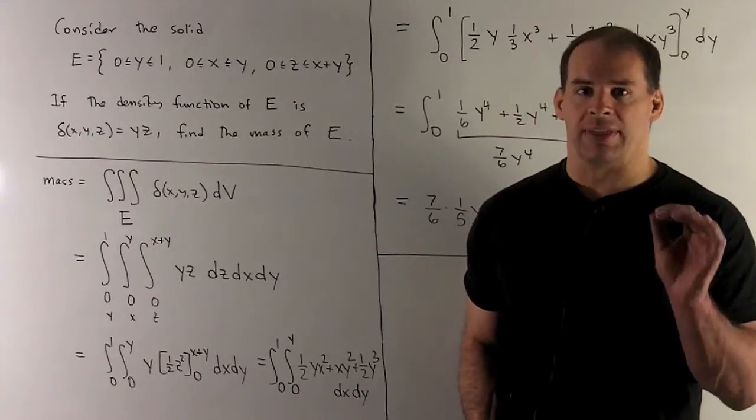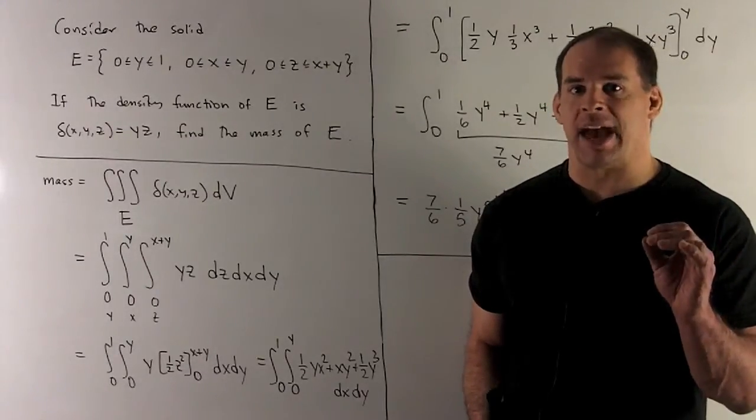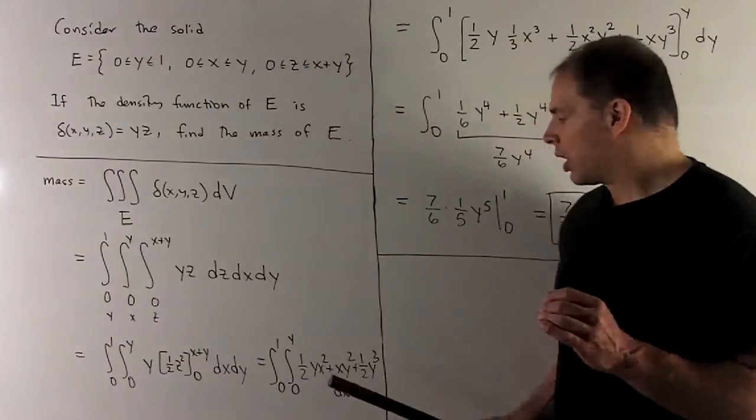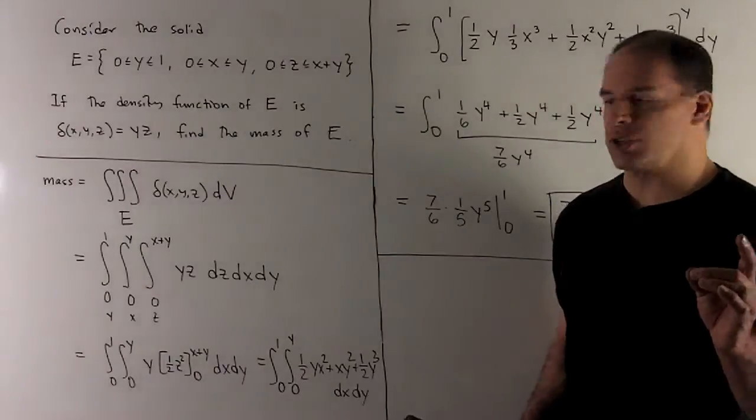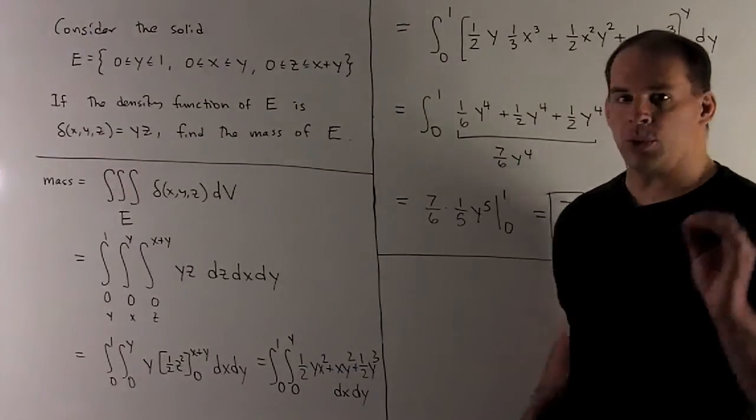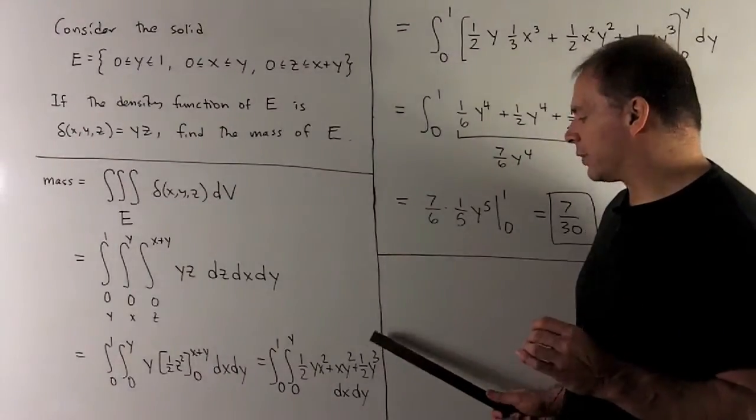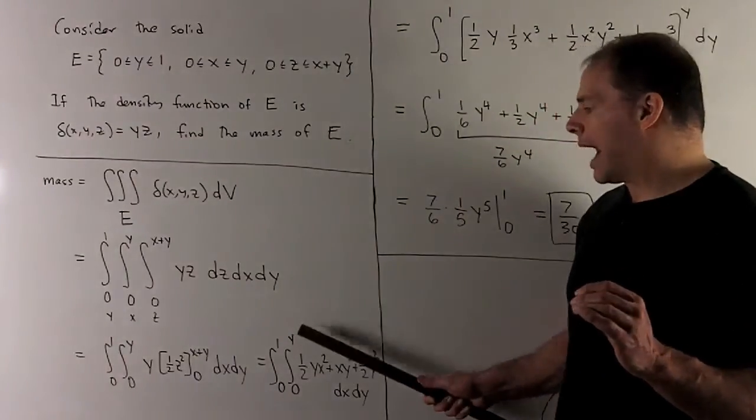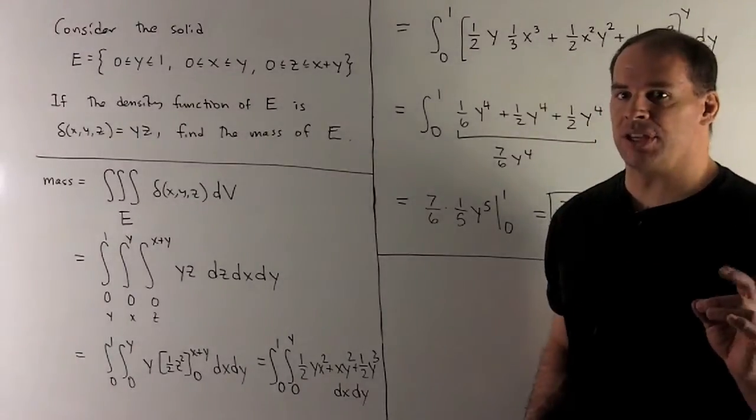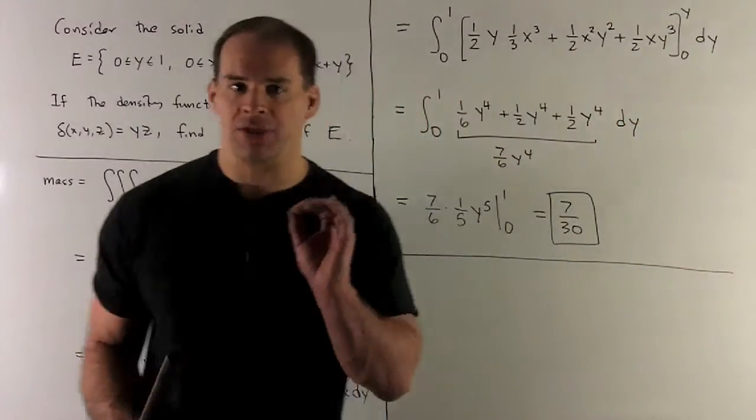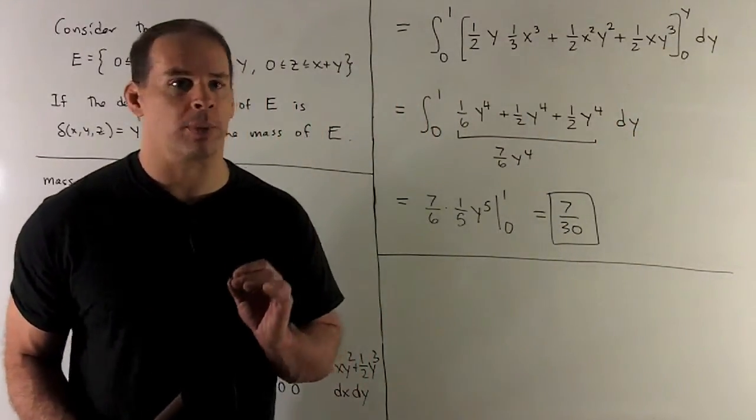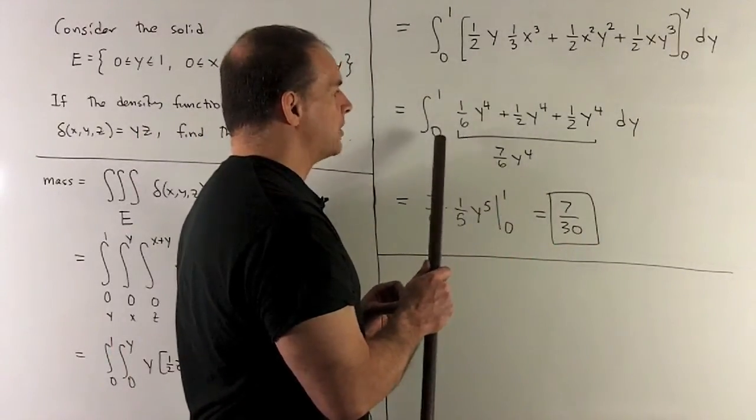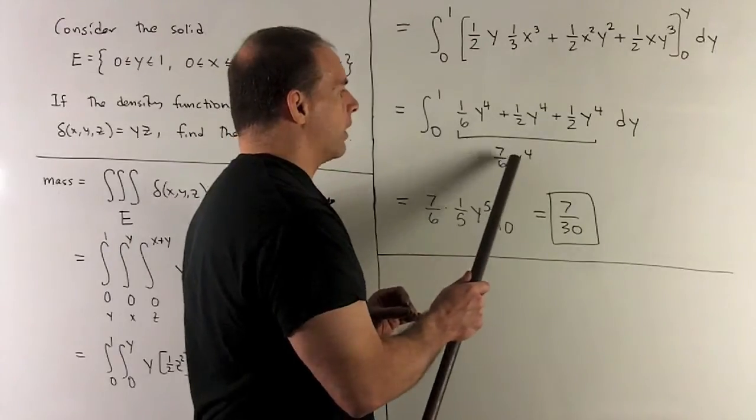Now we're going to take that and integrate with respect to x. Here y is going to be treated as a constant. So what happens? Our x² goes to (1/3)x³. Our x goes to (1/2)x². And then for the (1/2)y³, we're just going to tack on an x. We put in y, zero, take the difference. That leaves me with things that are all in terms of y to the fourth power. So what does this collapse to? It collapses to (7/6)y⁴.